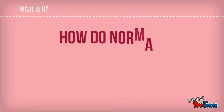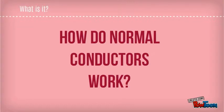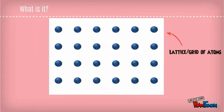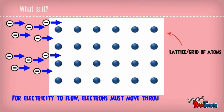In order to understand how superconductors work, it is important to know how normal conductors operate. A conductor consists of a lattice of atoms. For electricity to flow, electrons must move through this lattice with as little interference as possible.